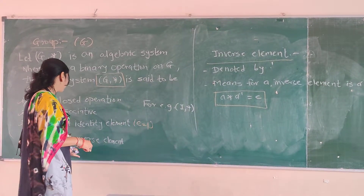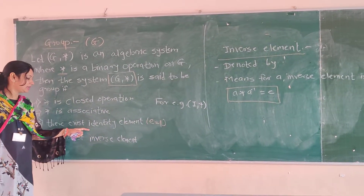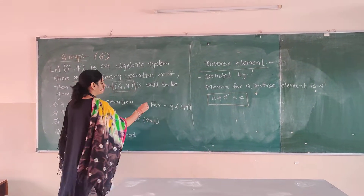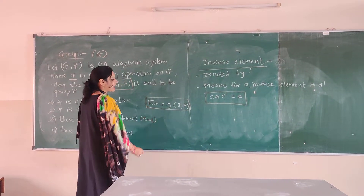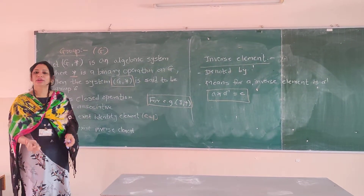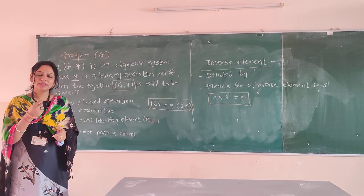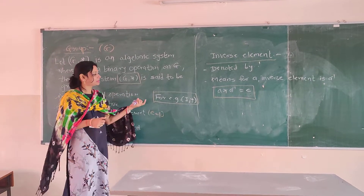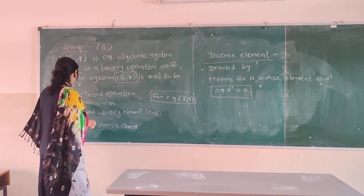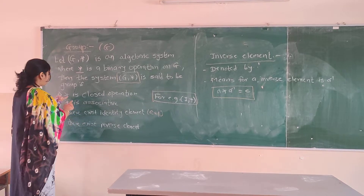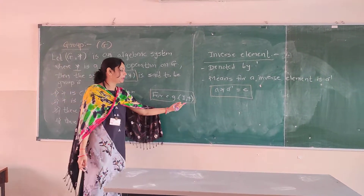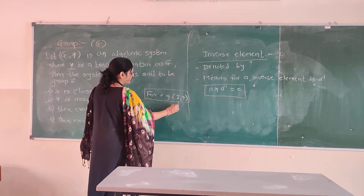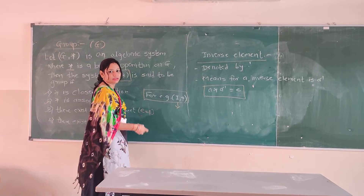When talking about a group, there should be an identity element as well as an inverse element. For example, consider the group (I, +), where I is the set of integers. Now we will see whether (I, +) is a group or not. We are dealing with addition as the operation, and I is the set of integers.